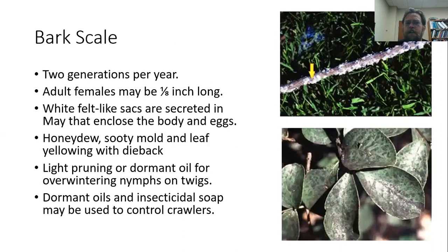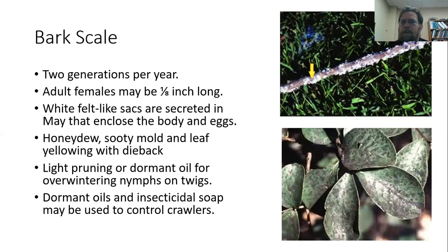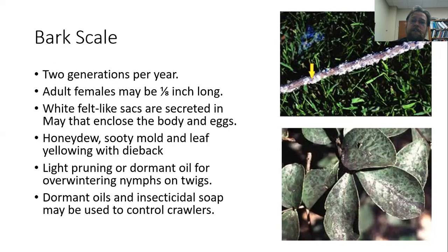Bark scale can show up with a couple of generations per year. What you normally notice first is a black substance on the leaves that rubs off when you touch it — that's sooty mold. Scale insects give off a sugary substance and a fungus grows on it. It's not really damaging the plant directly, but it does damage the plant's appearance. Applying a dormant oil in late winter, along with insecticidal soaps, helps manage the immature scale. The sooty mold itself will just wear off over time, or you can wipe it off a small plant.